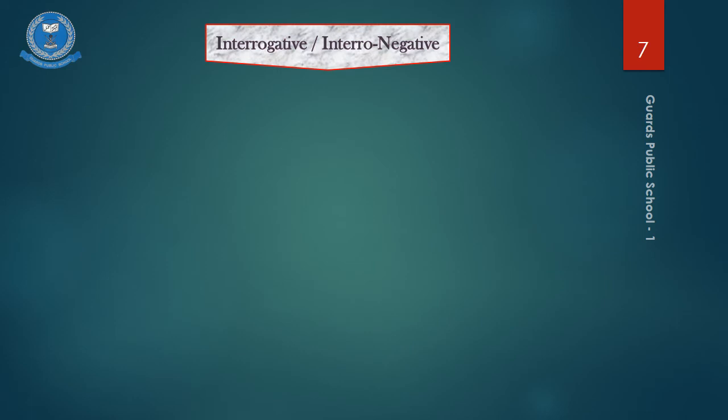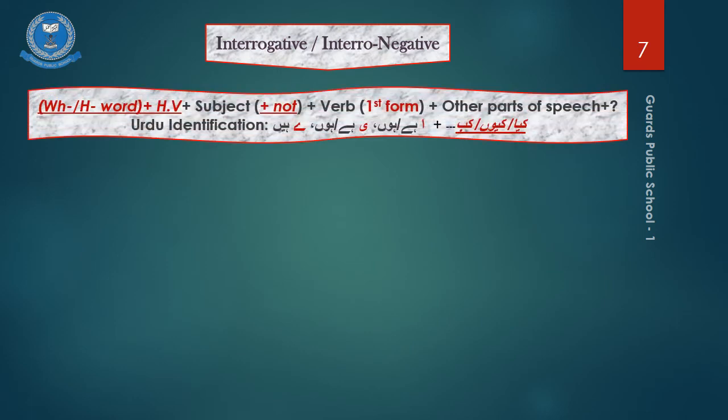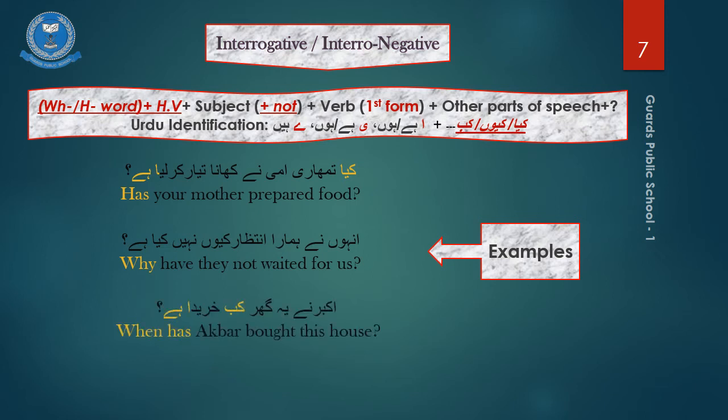Likewise, in the interrogative or intronegative sentence in Urdu, it uses the same identifiers as the previously mentioned two forms, plus the question words that you can see on your screen. For example, ke tumhari ammi nahi khana tiyaar kar liya hai. Has your mother prepared food? Second, unhoonne humara intazaar kiyo nahi kiya hai. Why have they not waited for us? The third example, akpar nahi yeh ghar kab khariida hai. When has akpar bought this house?